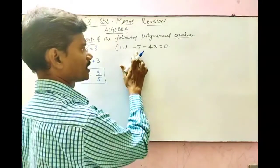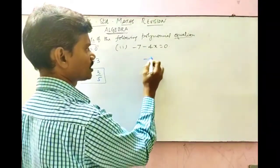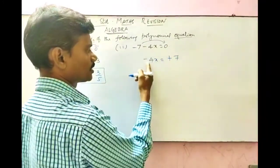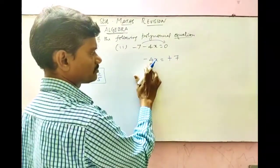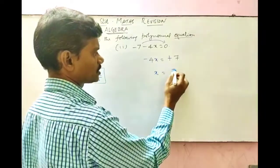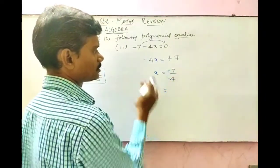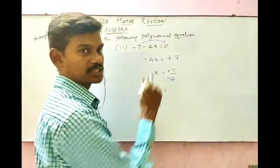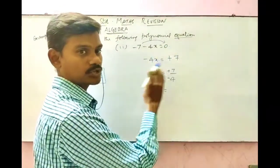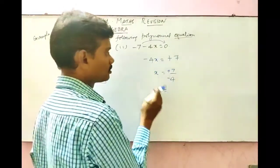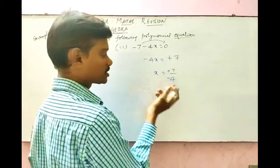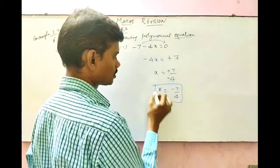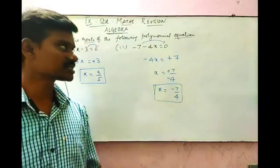In the second equation, we have minus 7 minus 4x equals 0. Take minus 7 to the other side — it becomes plus 7. Then divide by minus 4. When you take a number from multiplication to division, the operation changes. So x equals 7 divided by minus 4, that is minus 7 by 4. So the two roots are 3 by 5 and minus 7 by 4.